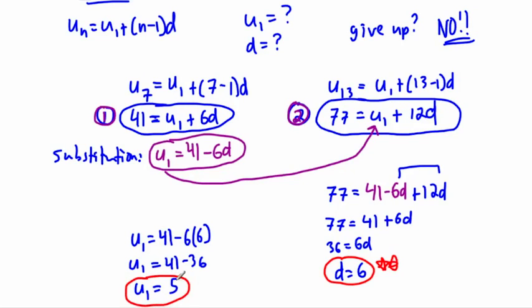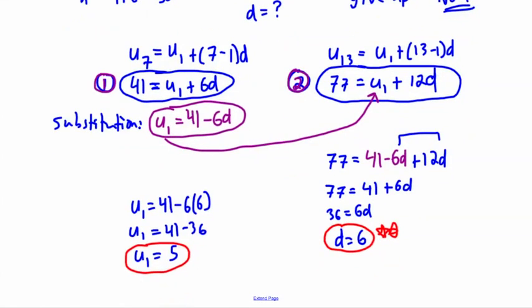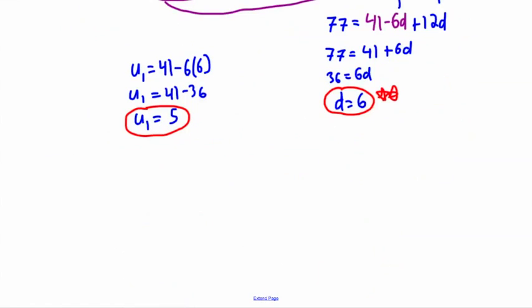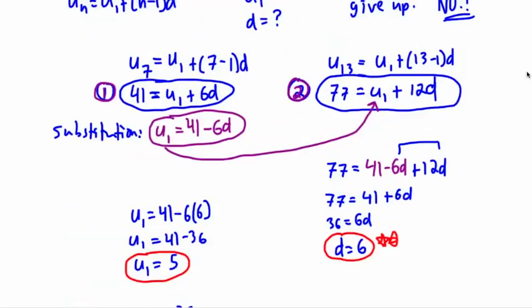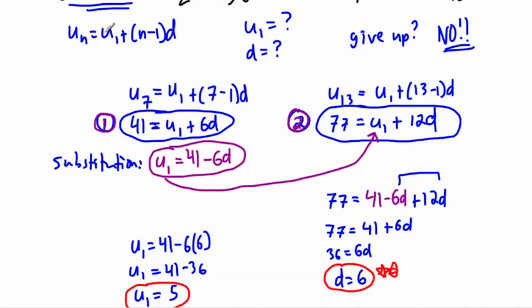And with that information, then I can finally put it all together. And say, therefore, I'm ready to go here. I can say, therefore, un, the generic any term you want, is going to be equal to 5 plus n minus 1 times d, which is 6 in this case. See, I'm just using the general formula here. Un equals u1 plus n minus 1 times d. I'm just filling in u1, and I'm filling in d.